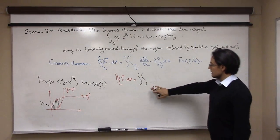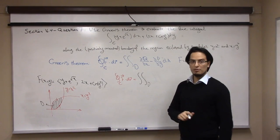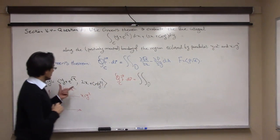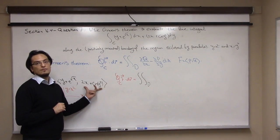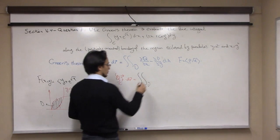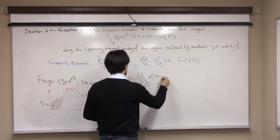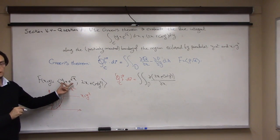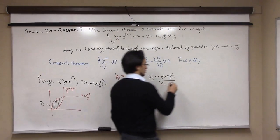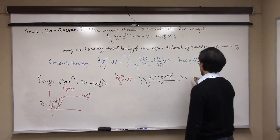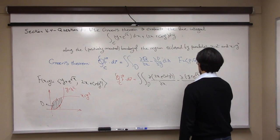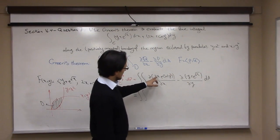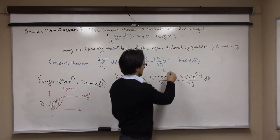Green's theorem says this line integral equals a double integral over the region D. The integrand is the partial derivative of the second component, 2x plus cosine(y²), with respect to x, minus the partial derivative of the first component with respect to y.